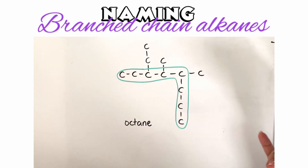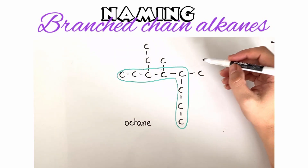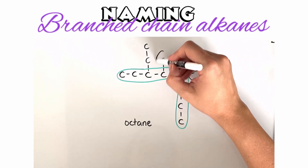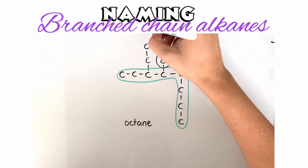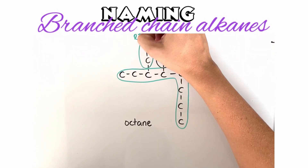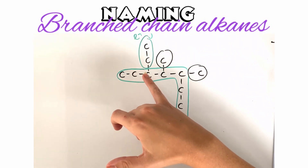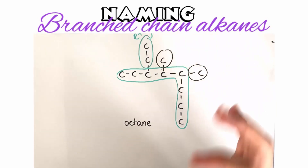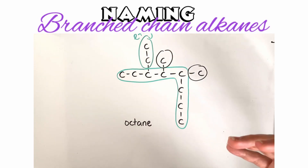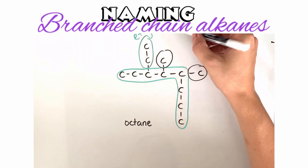Now let's look at the branches. We have a couple of different ones here. We have two methyl groups — this one and this one — both containing one carbon atom. We also have an ethyl group, which contains two carbon atoms in the branch.